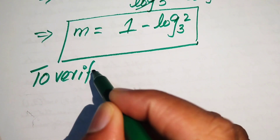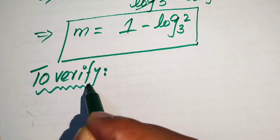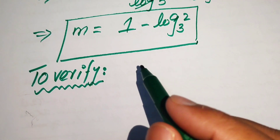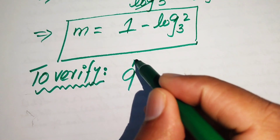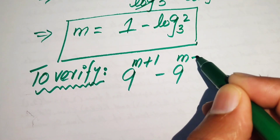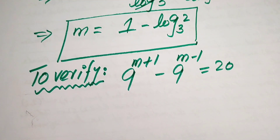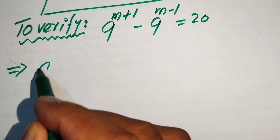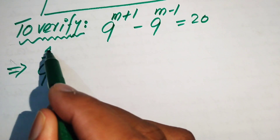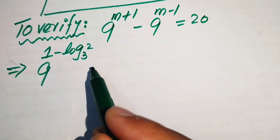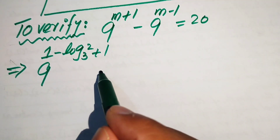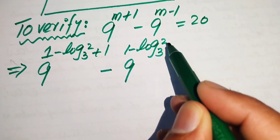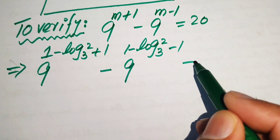To verify, we substitute the value of m back into the given equation to check whether it is satisfied. Copying the original equation: 9 to the power of m plus 1 minus 9 to the power of m minus 1 equals 20. Substituting m equals 1 minus log base 3 of 2 gives 9 to the power of (1 minus log₃2 plus 1) minus 9 to the power of (1 minus log₃2 minus 1) equals 20.